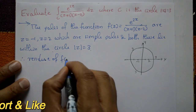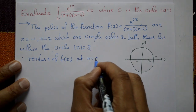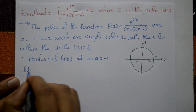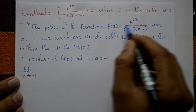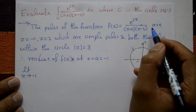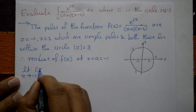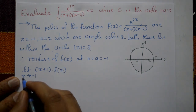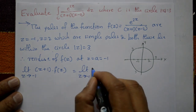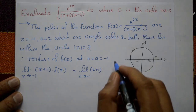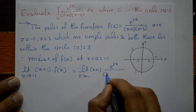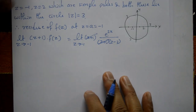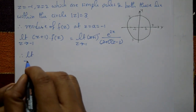The residue of f(z) at z = -1 is given by the limit as z tends to -1 of (z - a) · f(z), where a = -1, so this becomes (z + 1) · f(z). Substituting f(z) = e^(2z) / [(z+1)(z-2)], the (z+1) terms cancel in numerator and denominator.